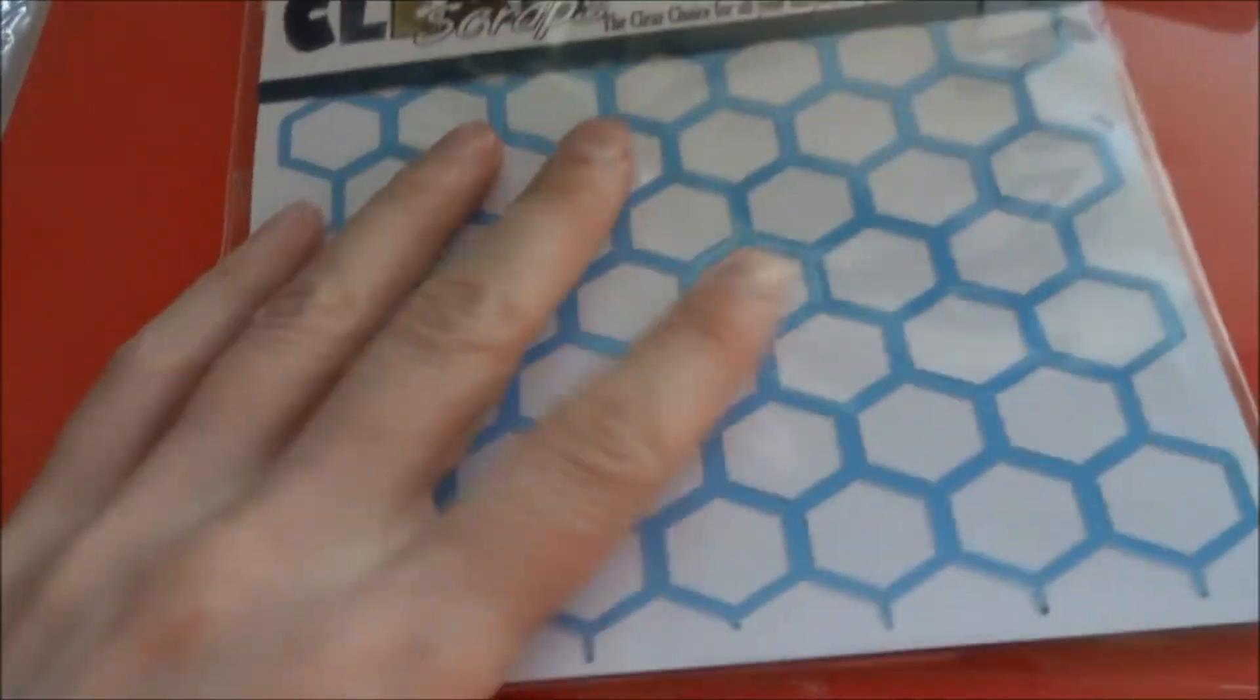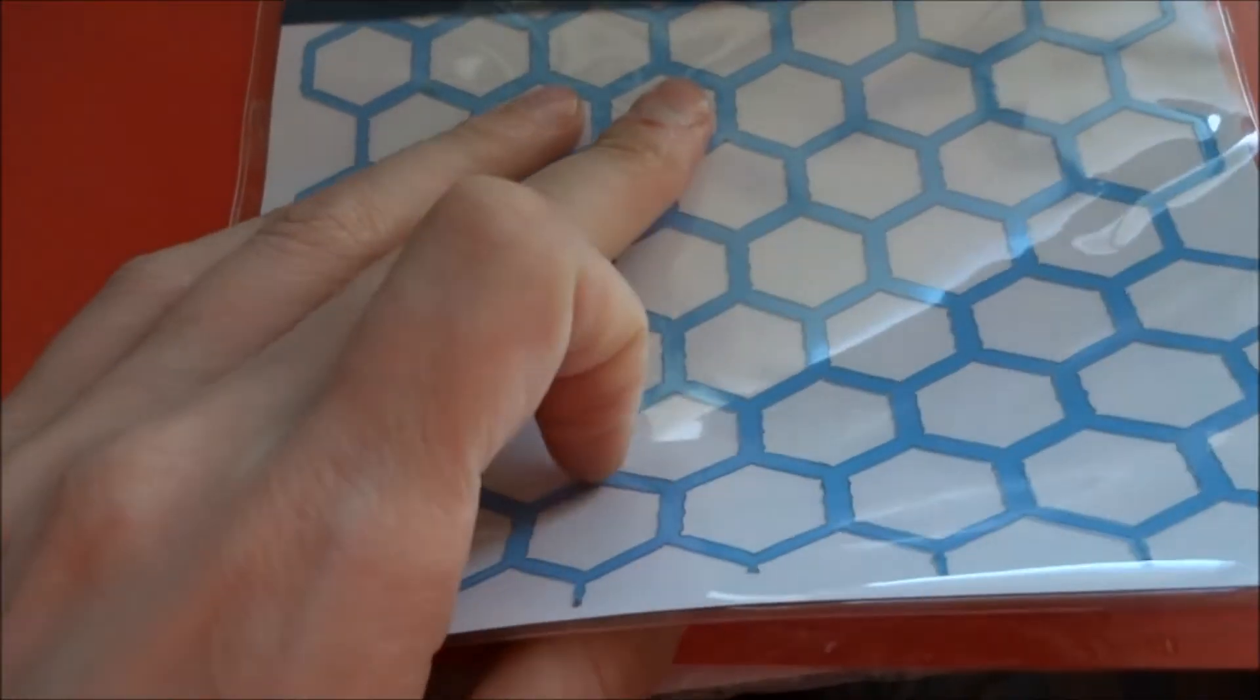And then I picked up this stencil, which is the chicken coop one. And I thought that'd be really fun. They show it here with some inks and stuff, so I thought that would be really neat to use the molding paste too.